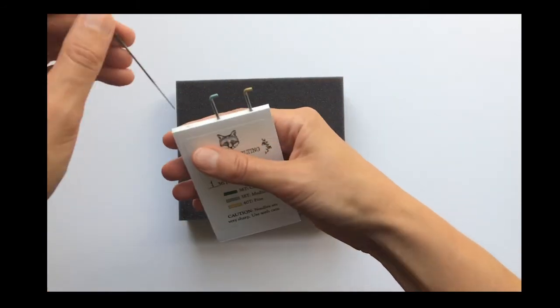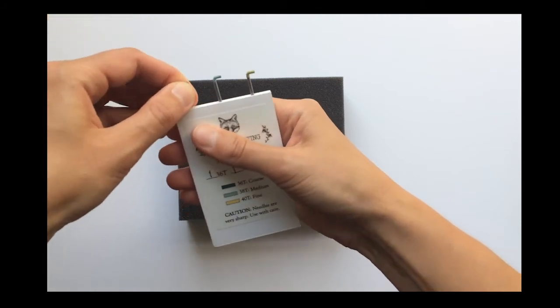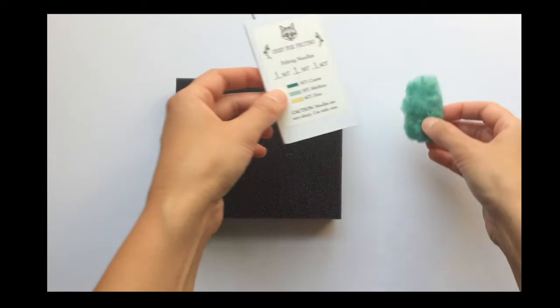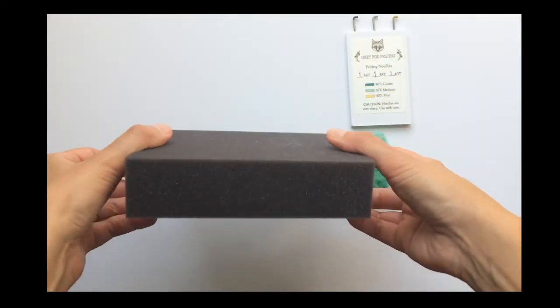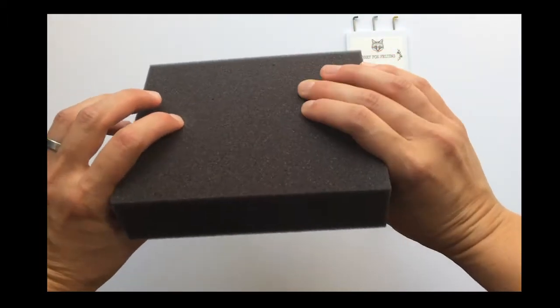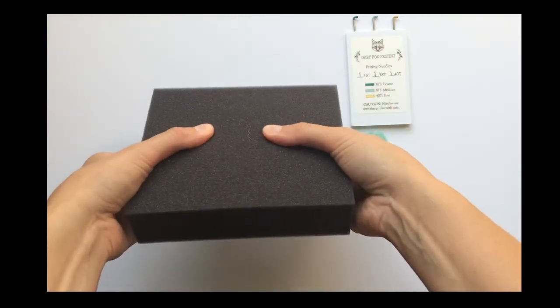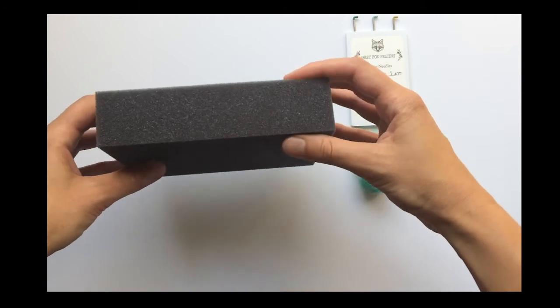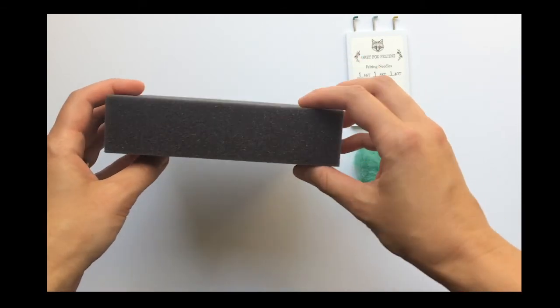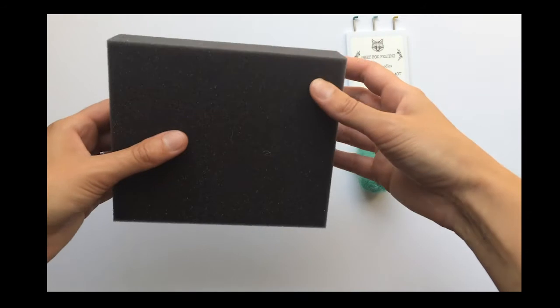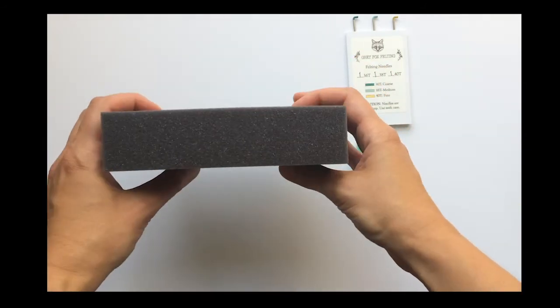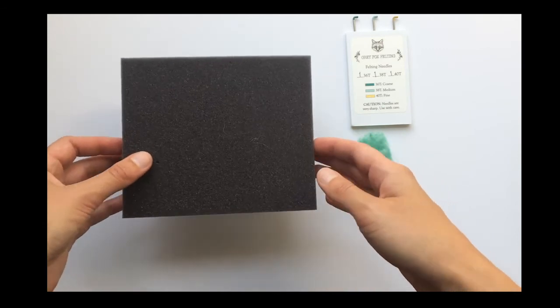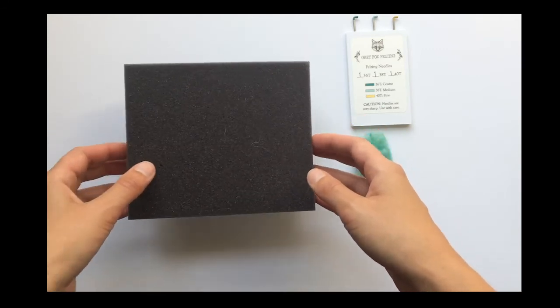Now the last thing I want to show you in this video is the surface to work on. So this is high density foam. This is what I use to do all my felting projects on. This one's about an inch and a half thick, so I recommend something at least that thick. Sometimes you can find it even thicker, but this seems to work fine for me.